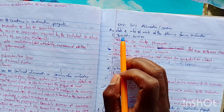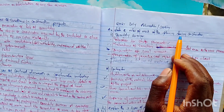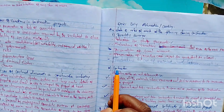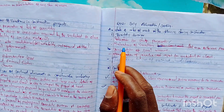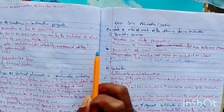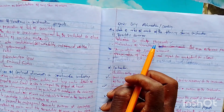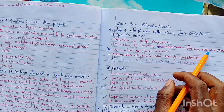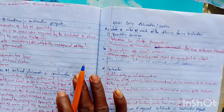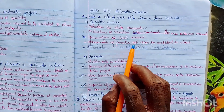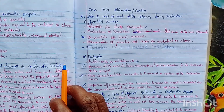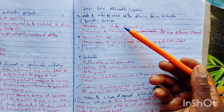The first question says: state four roles of each of the following during construction — quantity surveyor and contractor. For the quantity surveyor, the first role is valuation for stage payment, valuation for variations that arise as the work proceeds, preparation of the final account, and preparation of periodic cost reports for the architect or client.